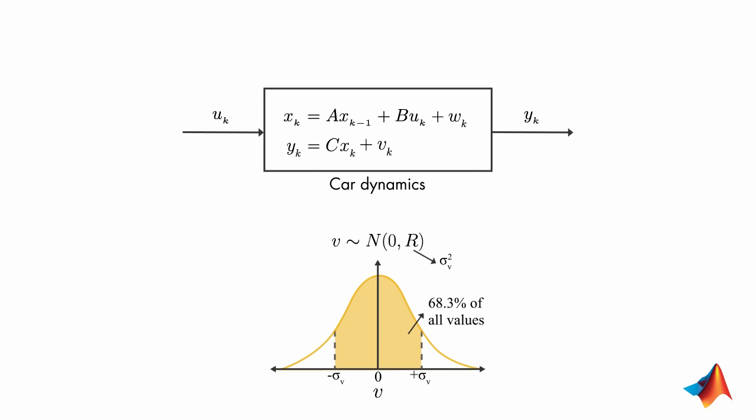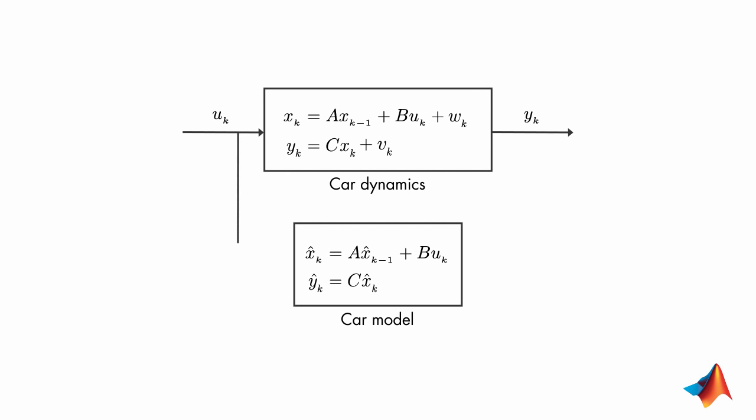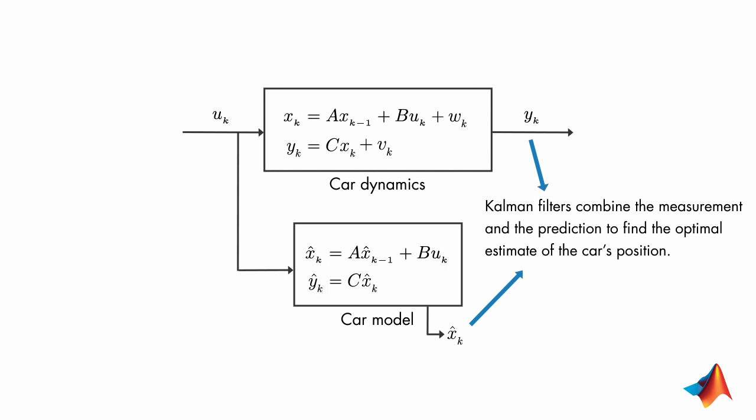Similarly, the process noise is also random and assumes a Gaussian distribution with covariance Q. Now we know that the measurement is noisy and therefore what we measure doesn't quite reflect the true position of the car. If we know the car model, we can run the input through it to estimate the position. But this estimate also won't be perfect because now we're estimating x, which is uncertain due to the process noise. This is where the Kalman filter comes into play. It combines these two pieces of information to come up with the best estimate of the car's position in the presence of process and measurement noise.